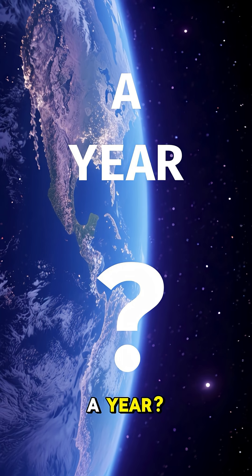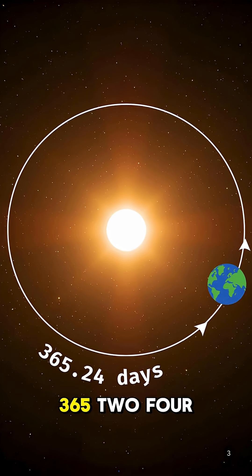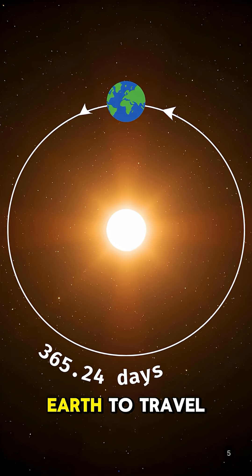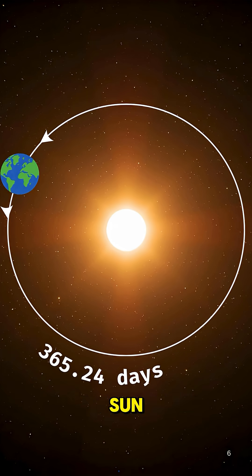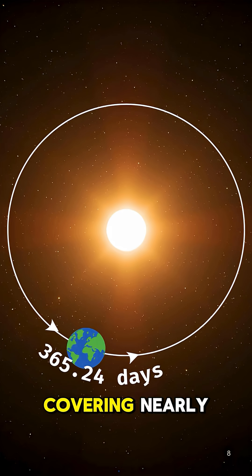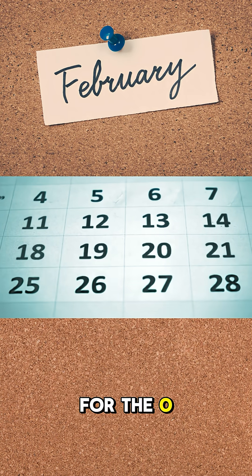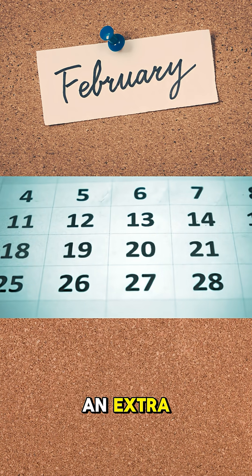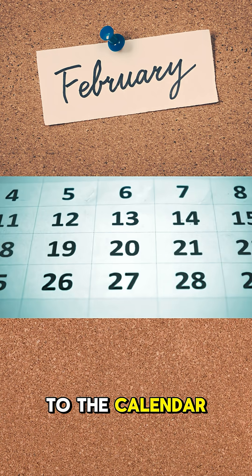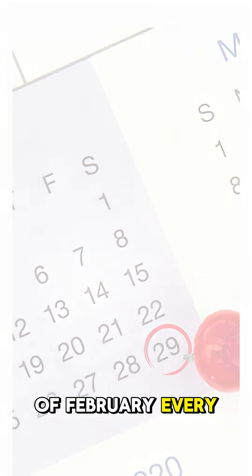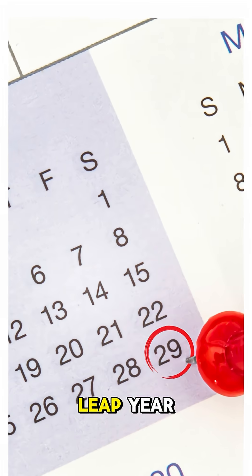Why is there a year? It takes about 365.24 days for Earth to travel once around the Sun along its orbit, covering nearly 940 million kilometers. To make up for the 0.24 days, an extra day is added to the calendar at the end of February every four years, creating a leap year.